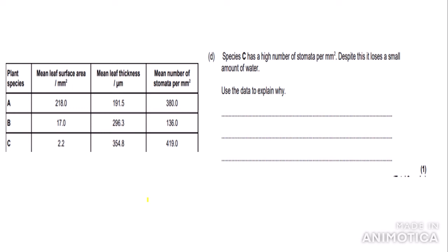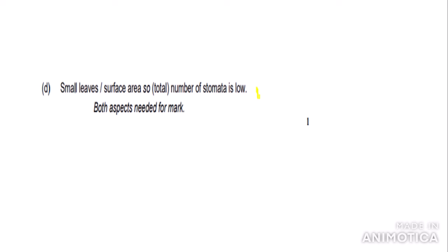The final part of this question states: species C has a high number of stomata per millimetre squared yet loses a small amount of water — use the table to explain why. Species C has a much lower leaf surface area than the others. Less surface area means a lower total number of stomata, even though the density per millimetre squared is high. The mark scheme requires both aspects: small leaves or small surface area, and therefore the total number of stomata is low. You cannot just state small surface area — you must include the explanation about total stomata count.